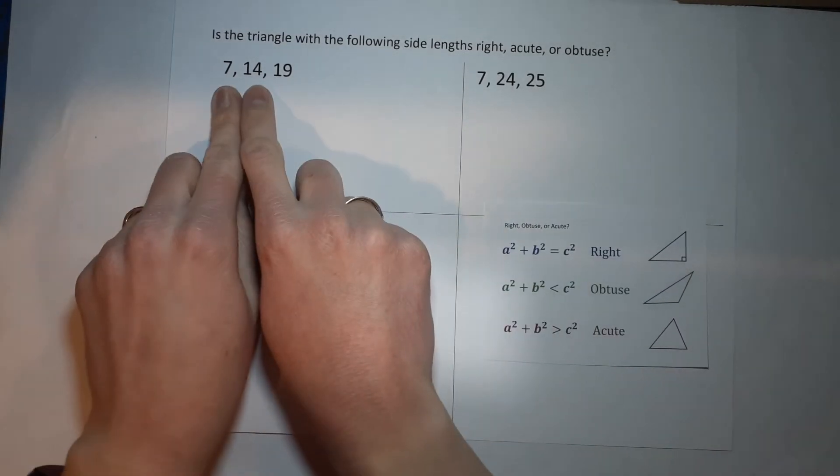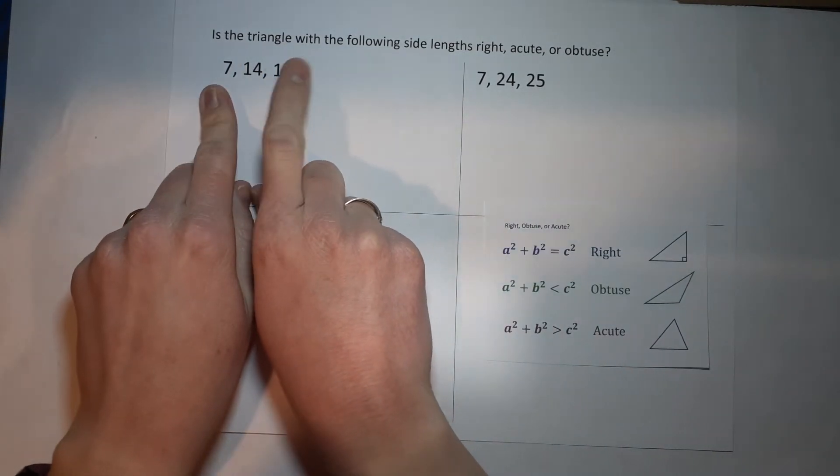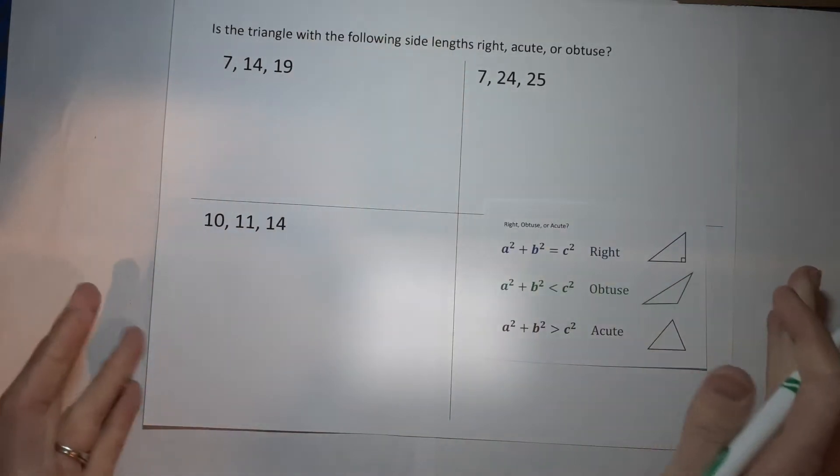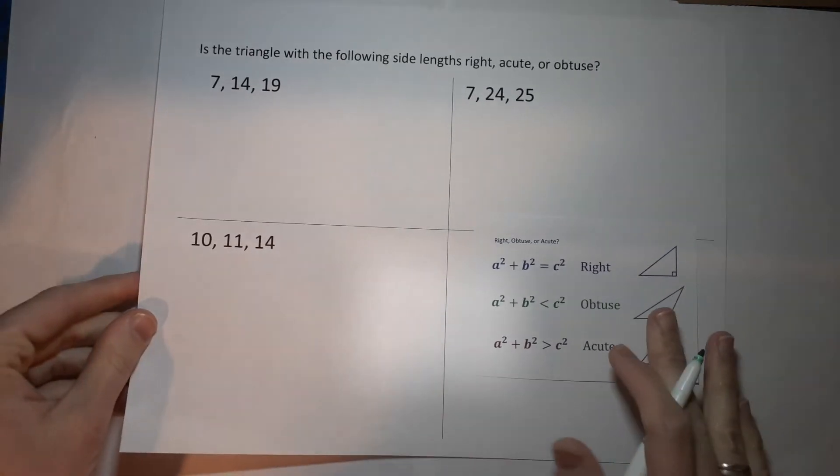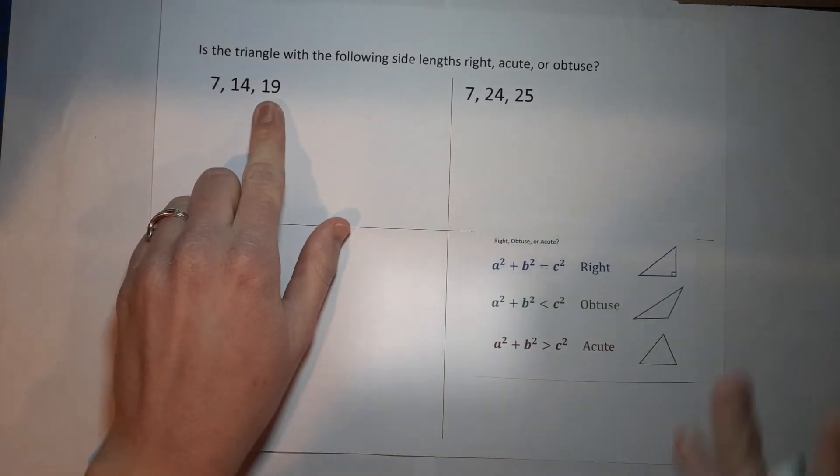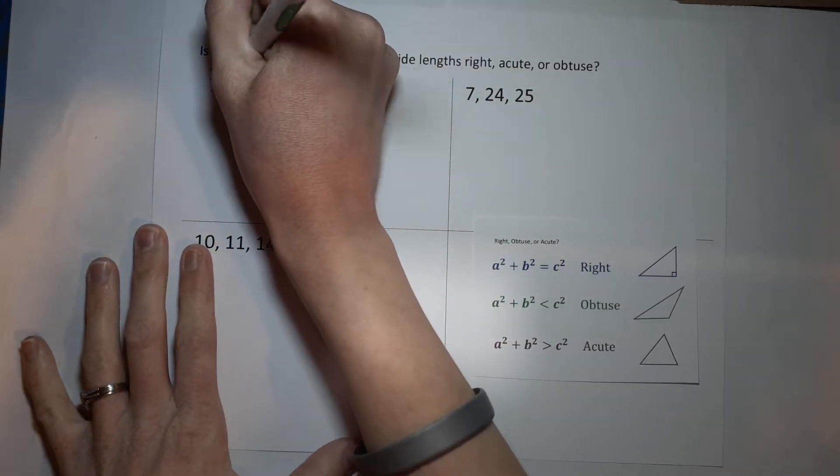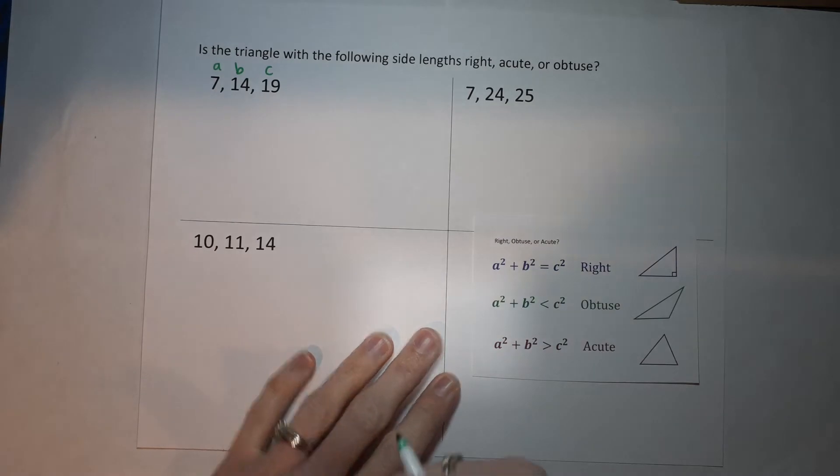First one, a triangle has the sides 7, 14, and 19. Is it right, obtuse, or acute? We are going to figure that out using the Pythagorean theorem. So I am going to label the largest number is c. The other two are a and b. It doesn't really matter which is which.